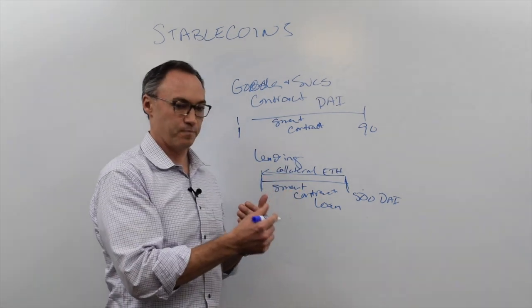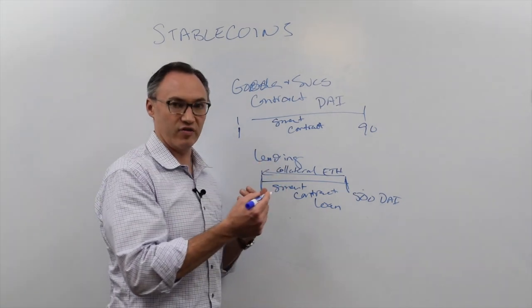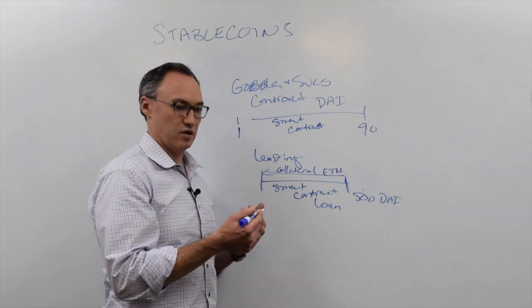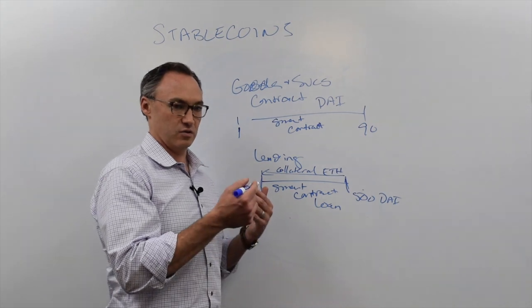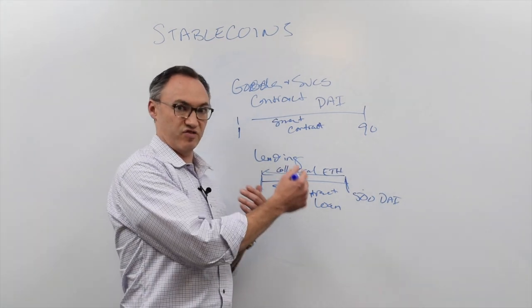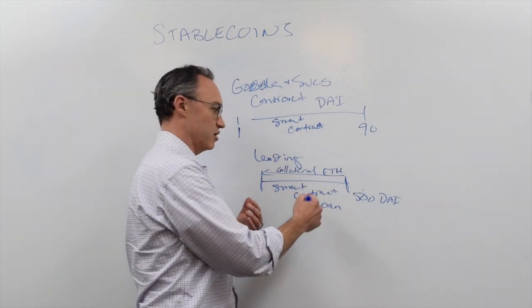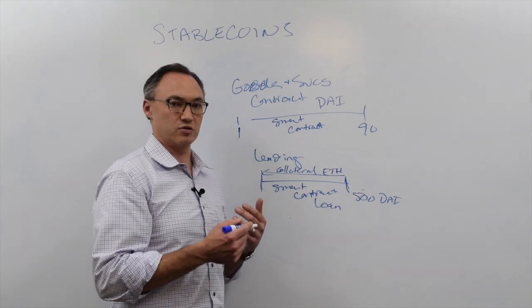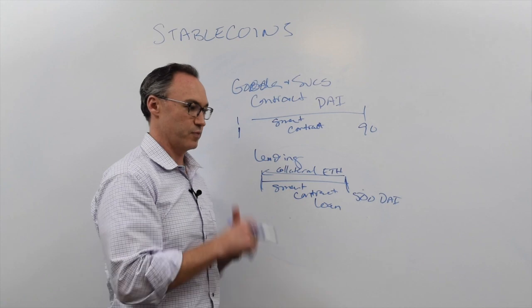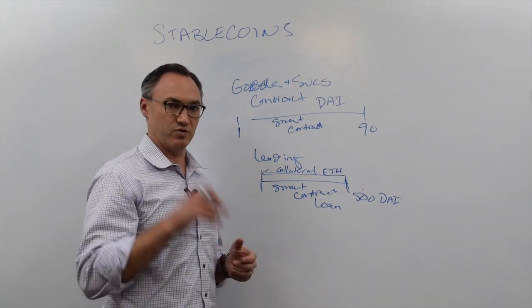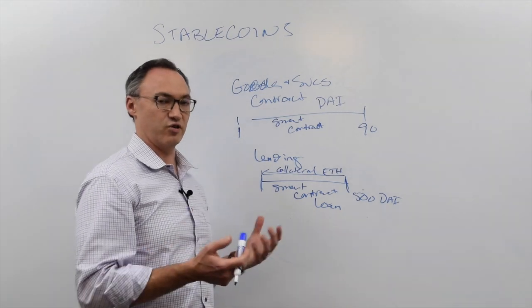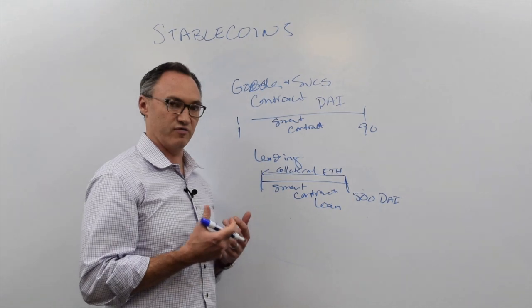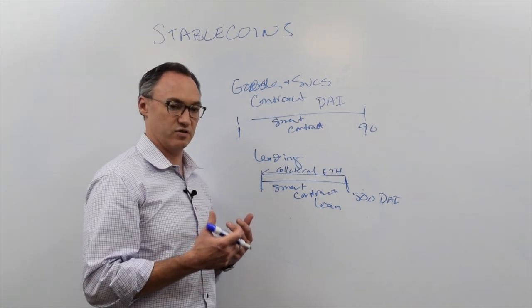That's what stablecoins are and why they're so important. In the future, you're going to see loans and contracts denoted in stablecoins so they can be wrapped in smart contracts, while eliminating the currency risk of using traditional volatile cryptocurrencies. We'll have more videos coming soon — remember to subscribe to the YouTube channel, visit us at InterAxis.io, and hit us on Twitter at InterAxis8. Let us know if there are other videos you'd like to see.